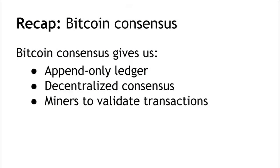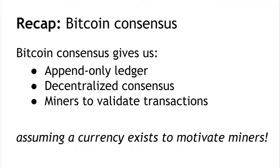To recap where we left off last time: the Bitcoin consensus mechanism gives us an append-only ledger — a data structure that we can only write to, and once data is written it's there forever. There's a decentralized protocol for establishing consensus about the value of that ledger. The miners who perform that protocol are validating transactions, making sure they're well-formed, that there aren't double spends, and that this thing can function as a currency. In this lecture we'll look at the details of how we actually build that currency to make the miners make this whole process happen.